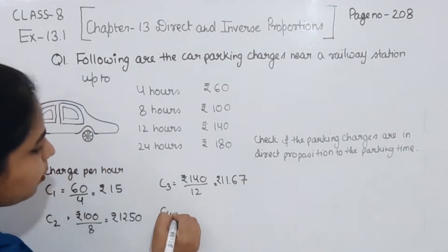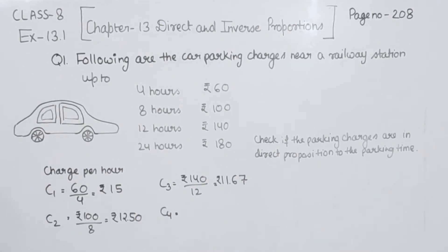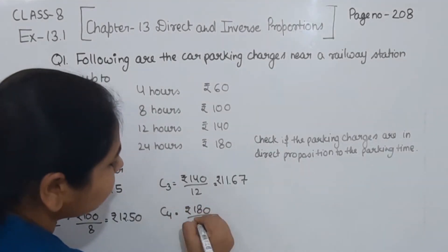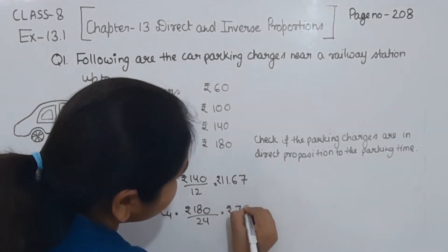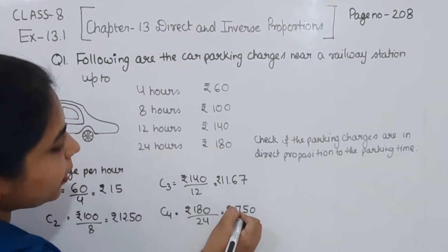Now comes to the fourth combination, this one we are having 24 hours. The charges we are having is Rs. 180. So I am going to write here Rs. 180 divided by 24, this one we are having as equal to Rs. 7.50.